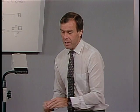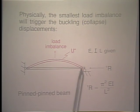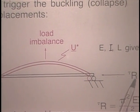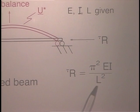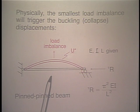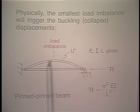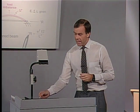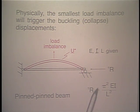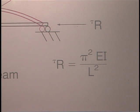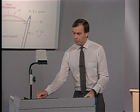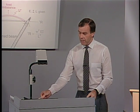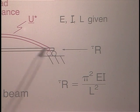Let's look at what this means physically. If we have a beam pinned at both ends subjected to a certain load, when the load takes on a certain value — the buckling load — the smallest imbalance of the load would immediately result in very large displacements. In other words, at τR, the buckling load, the structure is unstable to any smallest load imbalance. The material data for the structure are given, and in this particular case we use the data of an elastic beam.